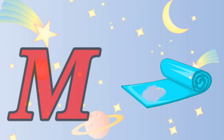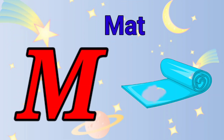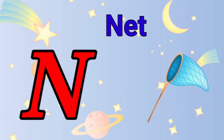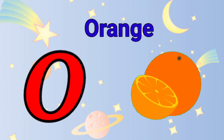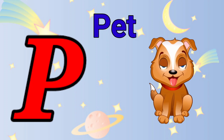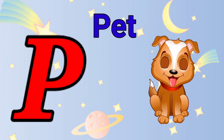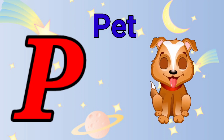M is for mat, m-m-mat. N is for net, n-n-net. O is for orange, o-o-orange. P is for pet, p-p-pet.